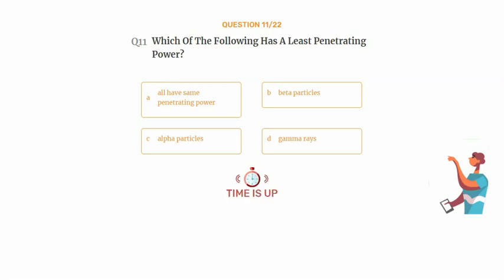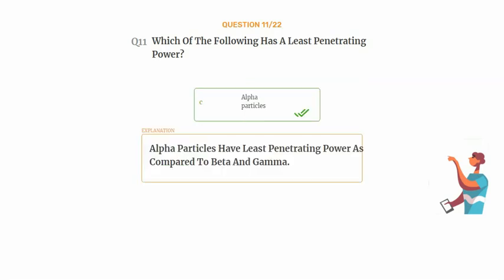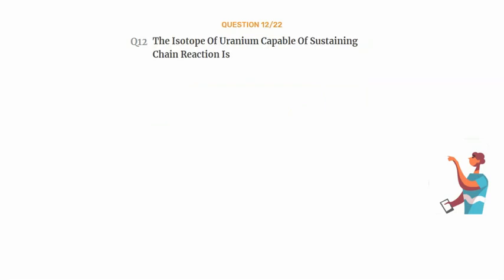The correct answer is Option C: Alpha particles. Alpha particles have least penetrating power as compared to beta and gamma.